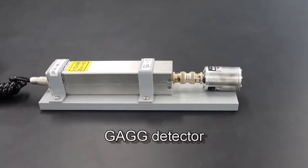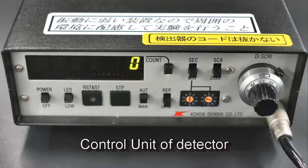This is G-8GG detector, used to detect gamma rays. This is the control unit of the detector. We will explain how to use it later.